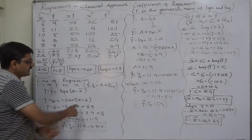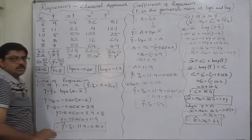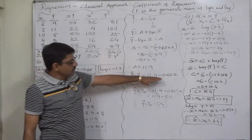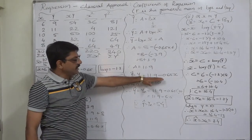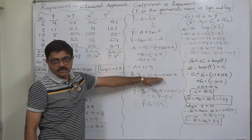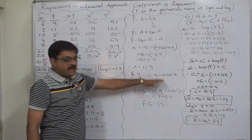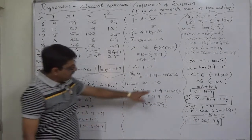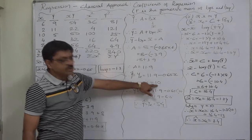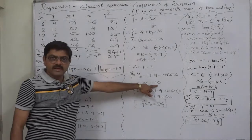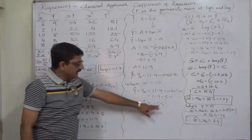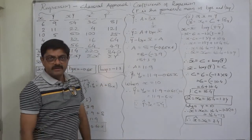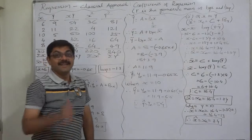These are the two alternatives to arrive at the equation of the line of regression. By substituting a known value of the independent variable into the regression equation, we obtain the estimated value of the dependent variable. Thank you very much.